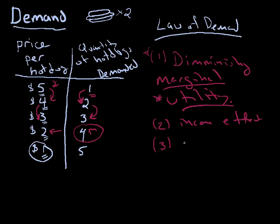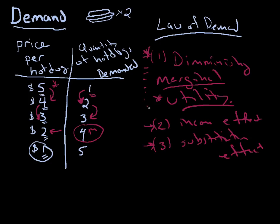Number three is the substitution effect. As the price of hot dogs goes down, you stop buying hamburgers — they're relatively more expensive, so you buy more hot dogs instead. As the price of hot dogs goes up, you substitute away from hot dogs and buy more hamburgers. But really, for understanding supply and demand in markets, it's the idea of diminishing marginal utility I want you to keep in mind — that underneath the demand curve, the benefit we get from consuming something goes down as we consume more of it.